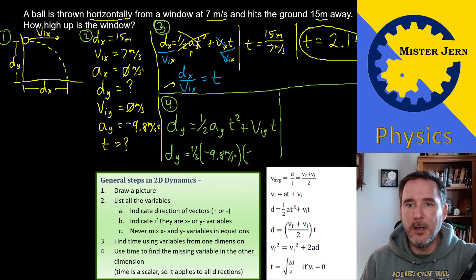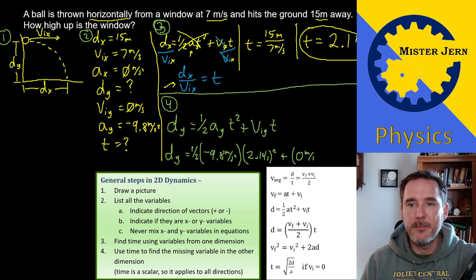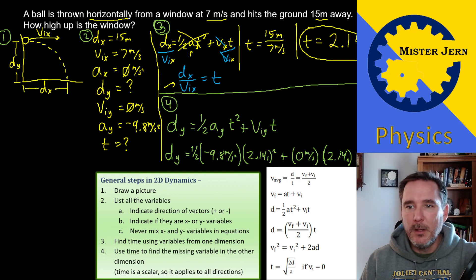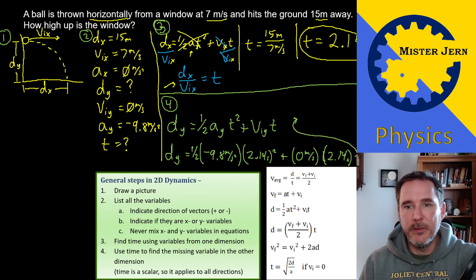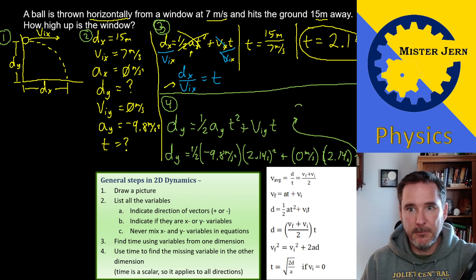Let's write it underneath. So displacement in the y direction is equal to one half times negative 9.8 meters per second squared times time squared, 2.14 seconds squared. Plus viy, well I guess I didn't even have to write any of this. Zero meters per second times time which is 2.14 seconds. Not squared. 2.14 seconds. So we're running out of room here. So let's move this up. When we put that into our calculator...